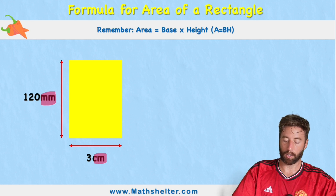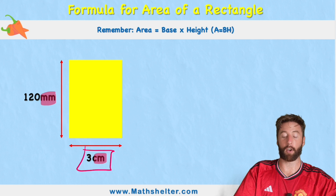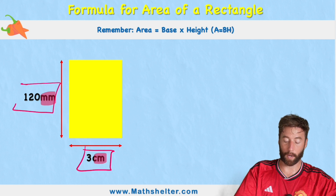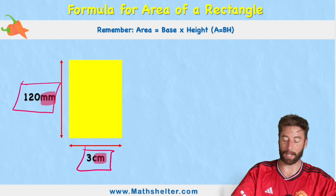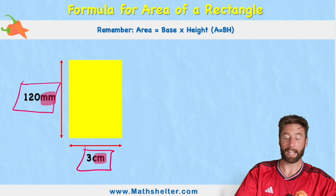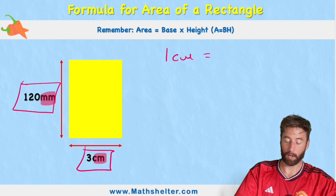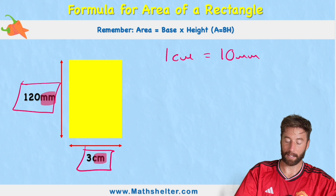So because 3 is an easier number to work with, I'm going to convert my 120 millimetres into centimetres. What we need to understand is that for every 1 centimetre we have 10 millimetres.